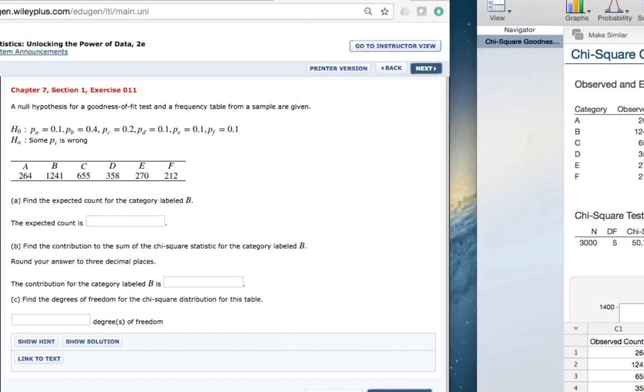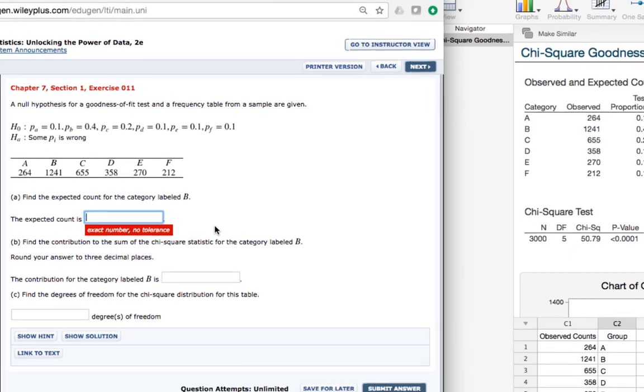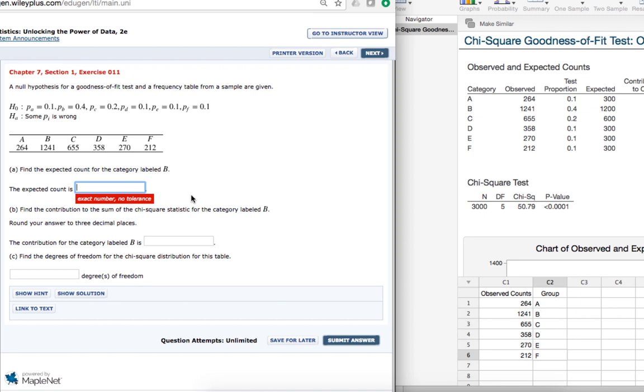Going back to Wiley Plus, the first question was to find the expected count for the category labeled B. If we go over to our Minitab Express output, the expected count for group B was 1,200.